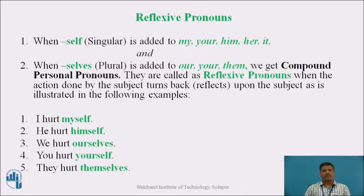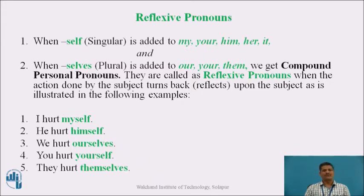Sentence number one: I hurt myself. Here, 'myself' is working as a reflexive pronoun because the action done by the subject 'I' turns back or reflects upon the subject itself — I hurt myself. So 'myself' is a reflexive pronoun. Likewise, in sentence number two: he hurt himself. Here, 'himself' is working as a reflexive pronoun because the action done by the subject turns back or reflects upon the subject itself.